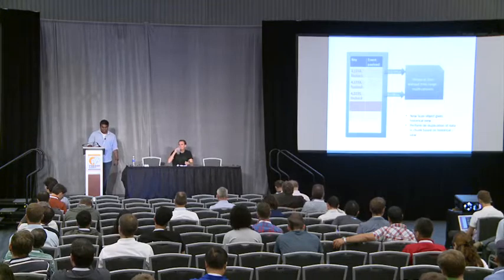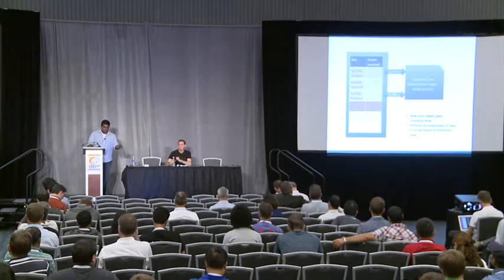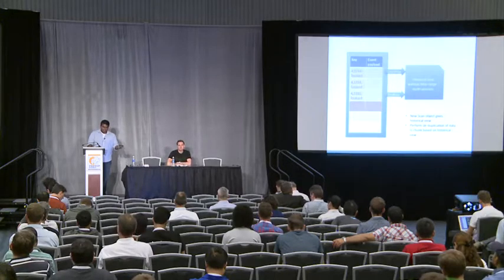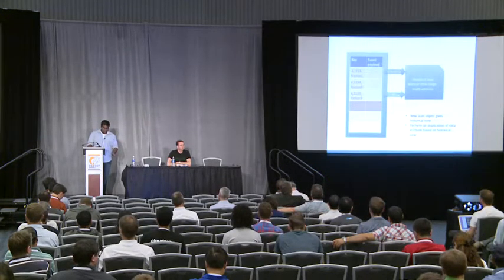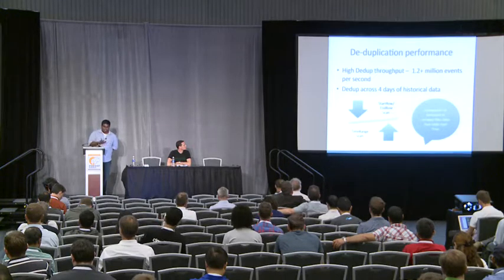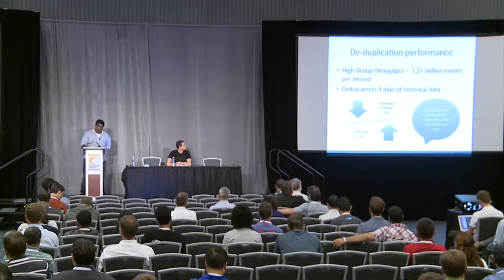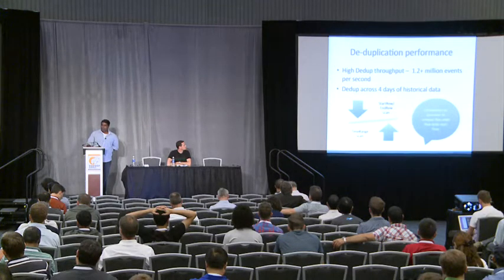At this point, we can perform deduplication: for every row contained in the chunk, we check whether that row existed in the historical scan. If it did, it's a duplicate — we don't emit it. Otherwise, we emit it. This resulted in a dramatic improvement in our deduping performance. At this point, we are deduping at about 1.2 million events per second, of course amortized in a given MapReduce run.